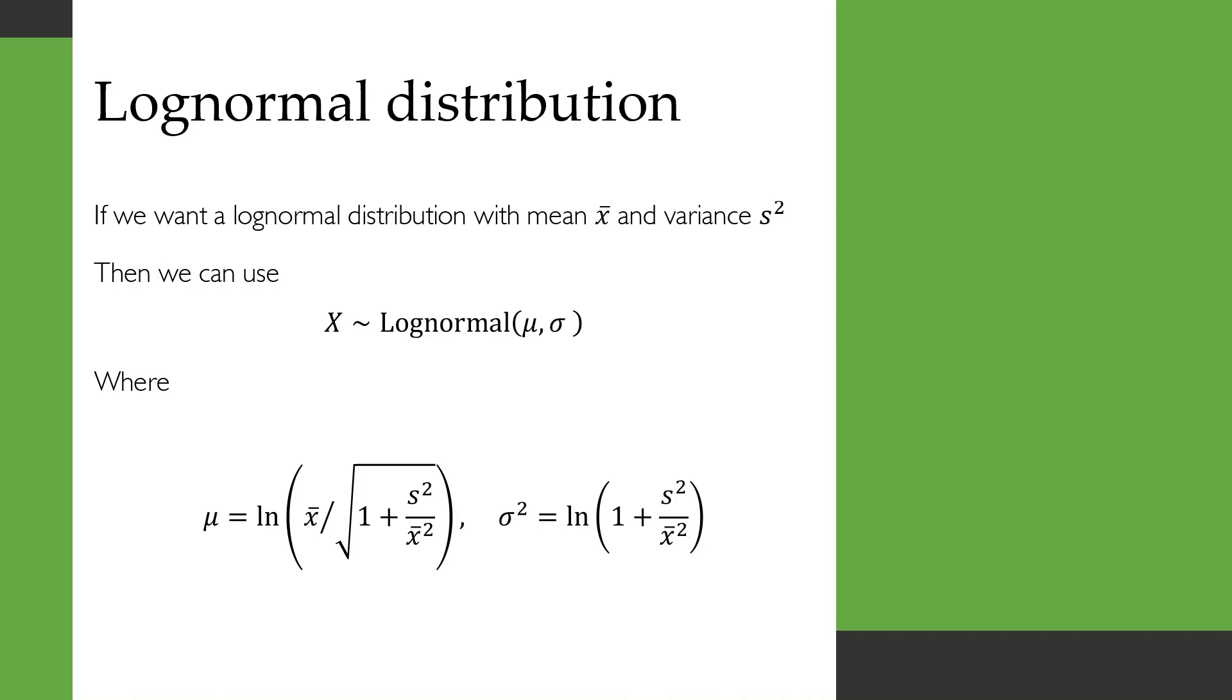If you want to use a lognormal distribution and you know the mean and the variance that you're aiming to use, then these equations here at the bottom use the method of moments to calculate what mu and sigma squared should be. So you might find those handy.